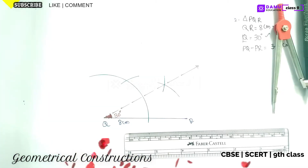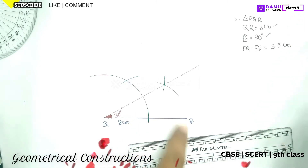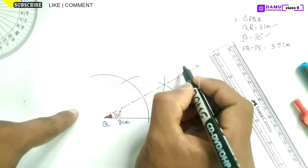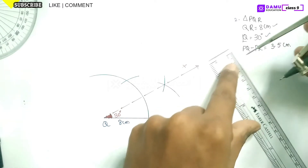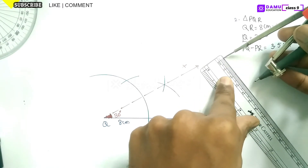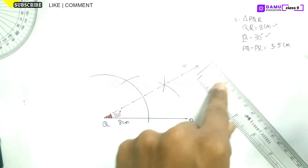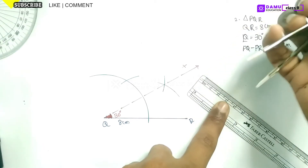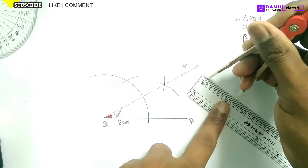The next step is to mark PQ minus PR equal to 3.5 centimeters upon this ray. So let's call this ray QS. Upon this ray we have to mark 3.5 centimeters. Take your scale and measure from Q up to 3.5 centimeters. If you have any doubts you can measure it with a divider also.